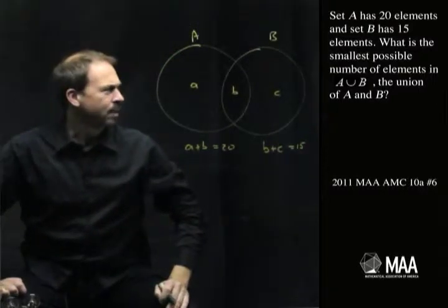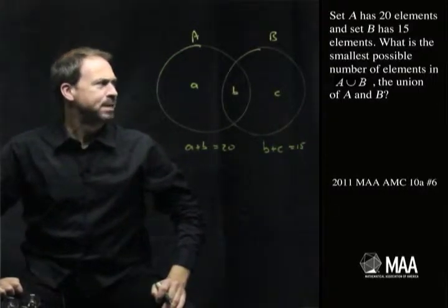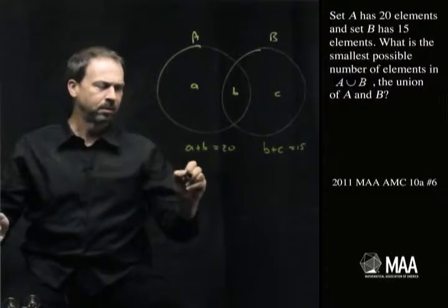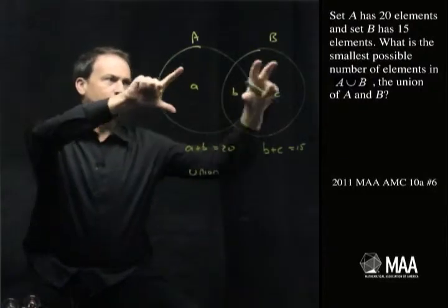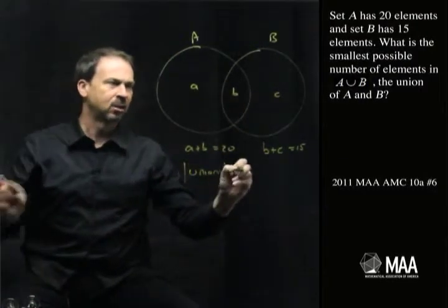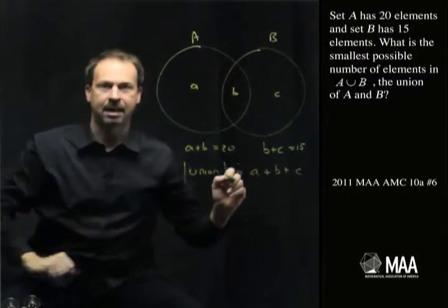And what's the question again? What's the smallest possible number of elements in the union? So the union is going to be all three parts. So the size of the union is going to be a plus b plus c.